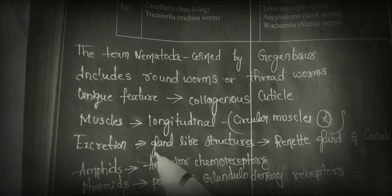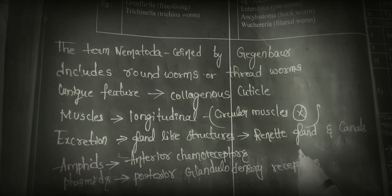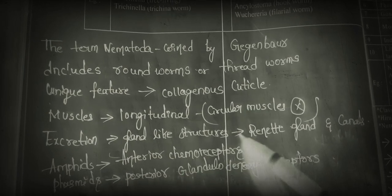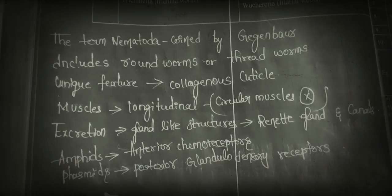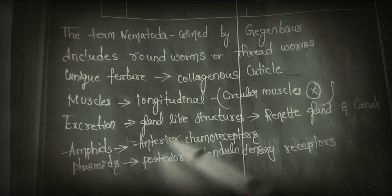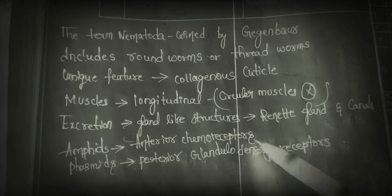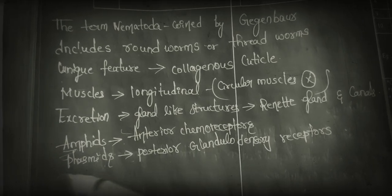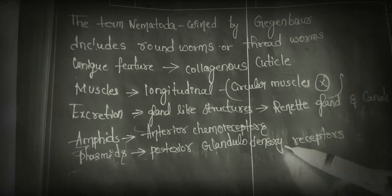Regarding excretion, in phylum Nematoda, excretion is performed by gland-like structures called renette glands and canals. We also need to know about two important terms: amphids and phasmids. Amphids are anterior chemoreceptors, whereas phasmids are posterior. These are glandulo-sensory receptors.